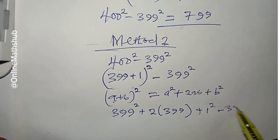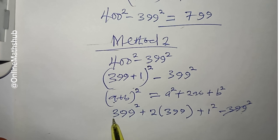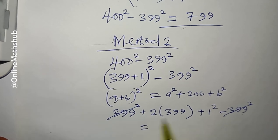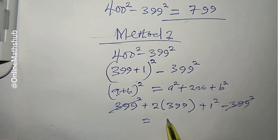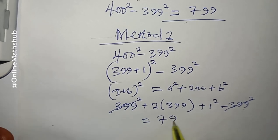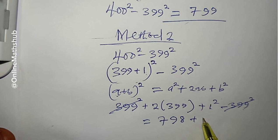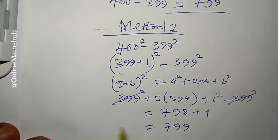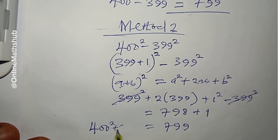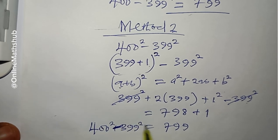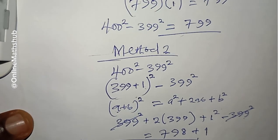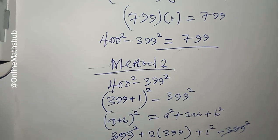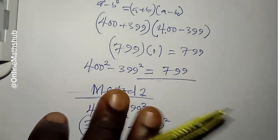Then minus 399 squared — this cancels with the 399 squared we have. What remains is 2 times 399, which gives 798, plus 1 squared which equals 1. Summing these gives 799, which is the same answer as method one. Whichever method is more convenient for you, you can use it to solve.